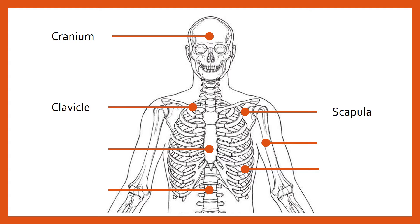The breastbone — the bone that runs down the middle of the chest — is known as the sternum. It's into the sternum that the ribs and the rib cage insert, where they join in the middle, linked with little bits of cartilage that connect the ribs into the sternum.